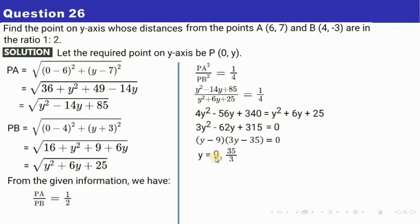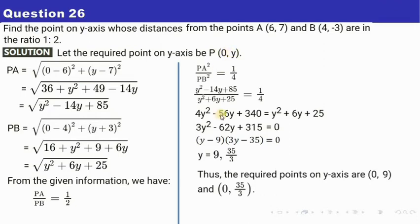So from here the values of y will be equals to 9 and 35 by 3. So the required point on the y axis will be (0, y), that is (0, 9) and (0, 35/3). So you may pause the video to note down.